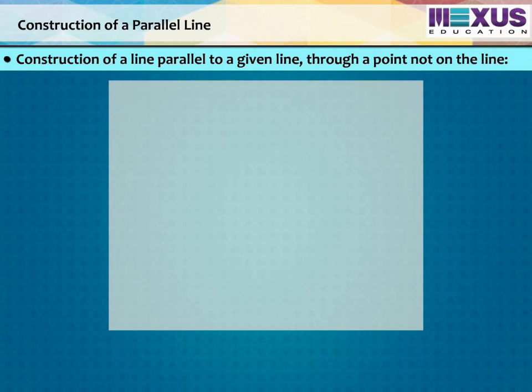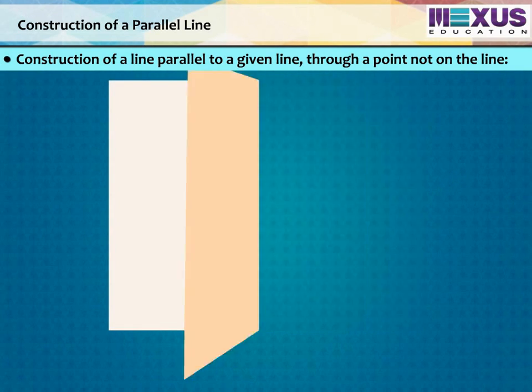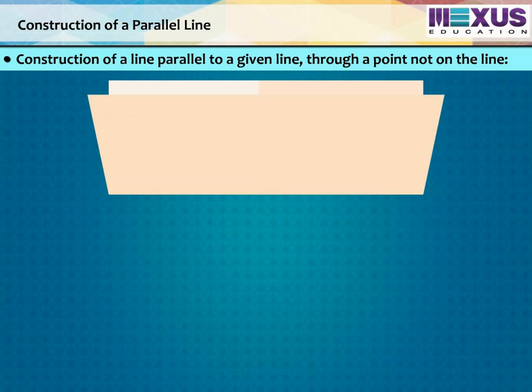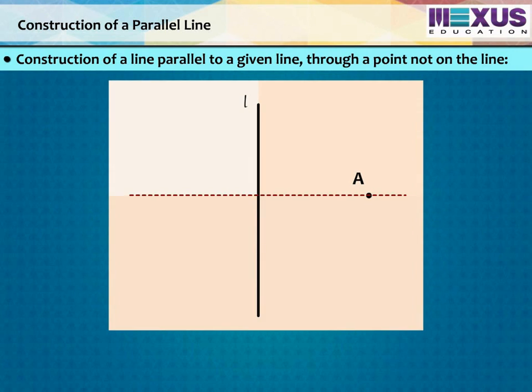Let us construct a parallel line from an external point using a sheet of paper. First, take a sheet of paper and fold it. Now open the fold and mark this line as L. Now mark a point A on paper outside line L. Then fold the paper perpendicular to line L such that it passes through A. Name the line as AN.